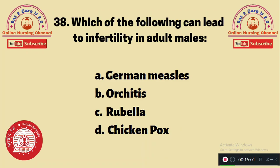Question 38: Which of the following can lead to infertility in an adult male? A. German measles, B. Orchitis, C. Rubella, D. Chickenpox. Inflammation of the testis — orchitis — can cause infertility in adult males. The answer is option B.